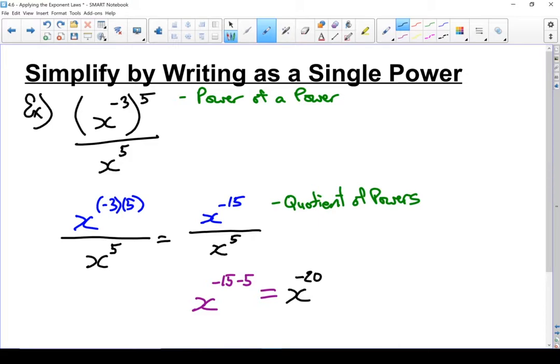Now we don't want to leave it as a negative exponent, we're going to correct that. We're going to turn it into a positive exponent using our methods for dealing with negative exponents. I'm going to take the reciprocal of that x and rewrite the power as positive. It becomes 1 over x to the power of 20.